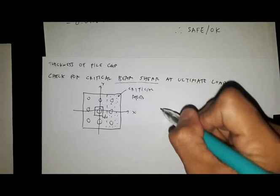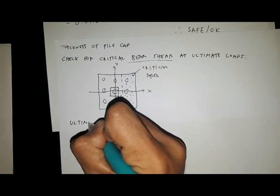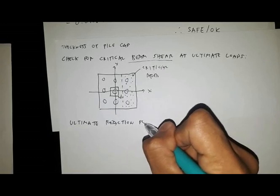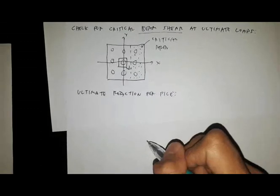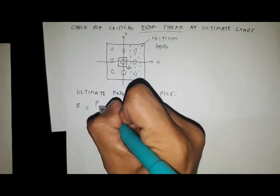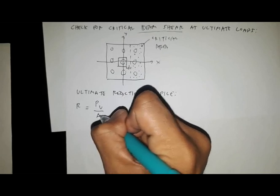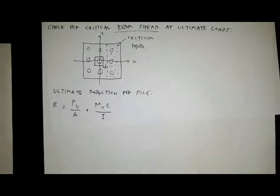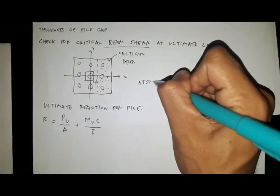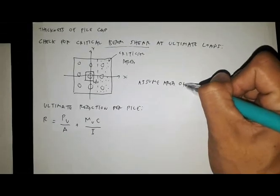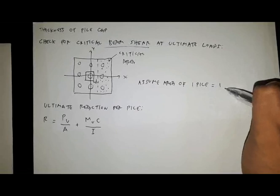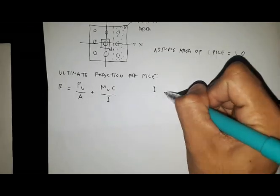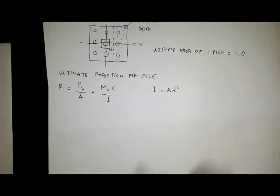Let's solve for the ultimate reaction per pile. We have R = Pu/A + MuC/I. We assume area of one pile equal to one, and we have I = AD², the moment of inertia formula.